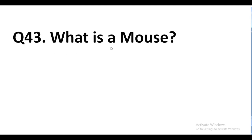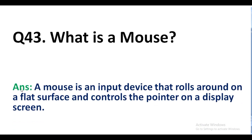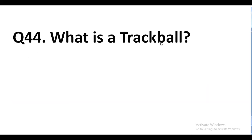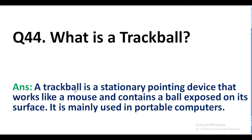Question number 43. What is a mouse? Answer. A mouse is an input device that rolls around on a flat surface and controls the pointer on a display screen. Question number 44. What is a trackball? Answer. A trackball is a stationary pointing device that works like a mouse and contains a ball exposed on its surface. It is mainly used in portable computers.